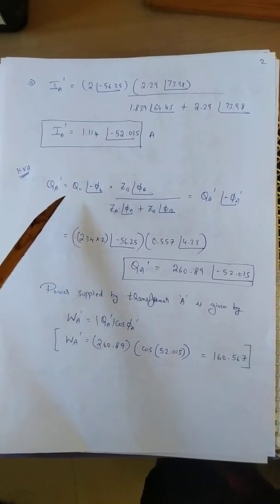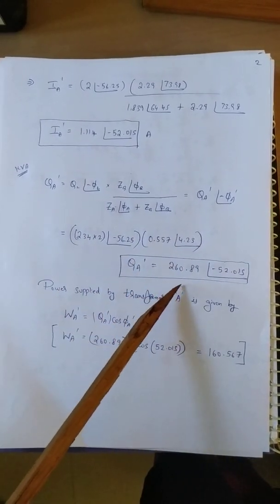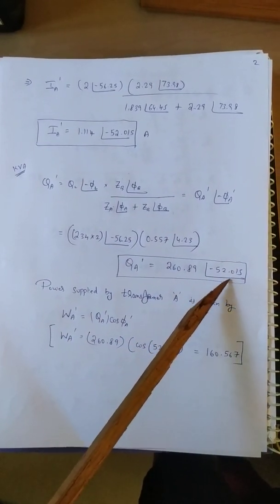Q'A is given by the above said formula. If we substitute the same we get 260.89 at an angle minus 52.015.